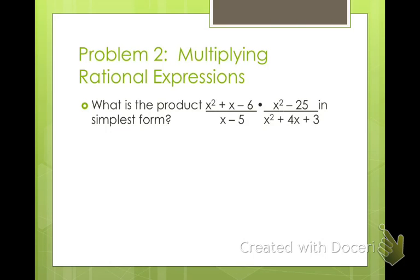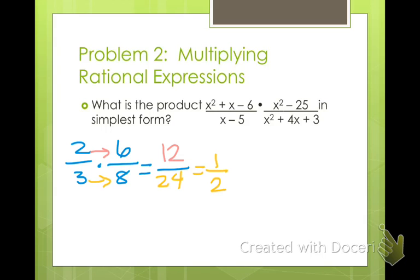Alright, when we multiply rational expressions, what's the product in simplest form of x² + x - 6 divided by x - 5 times x² - 25 over x² + 4x + 3? Now, when we multiply fractions, let me just do a little quick review. If we have two-thirds and we're multiplying it by 6 eighths, how do we multiply fractions? Well, we multiply fractions by multiplying across the numerator, 2 times 6 is 12, and then multiplying across on the denominator, and 8 times 3 is 24. So we could reduce, this is 1 half.